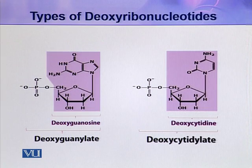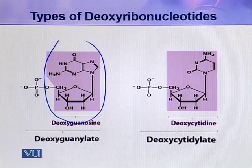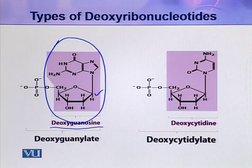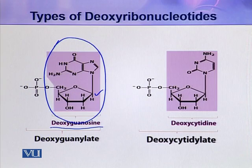In the third type of deoxyribonucleotide, the colored portion contains a pentose sugar and the nitrogenous base is guanine. So this nucleoside is called deoxyguanosine. And if this nucleoside also contains a phosphate group, it becomes a nucleotide, and this nucleotide is deoxyguanylate.